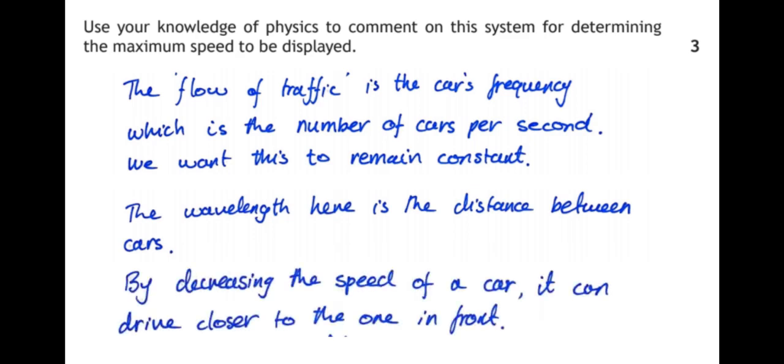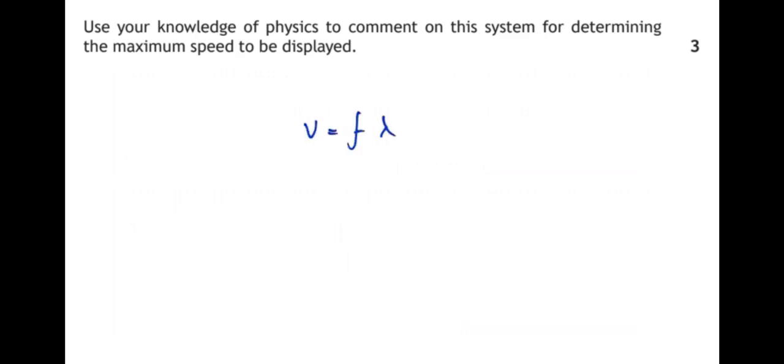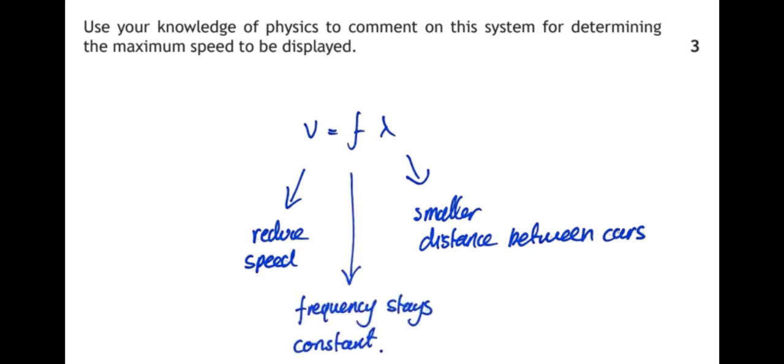However, by decreasing the speed of a car it can drive closer to the one in front. So this is our formula: speed equals frequency times wavelength. If we reduce the speed, then we have a smaller distance between the cars and that maintains the frequency of the cars, and it means that the cars move more freely through the traffic.